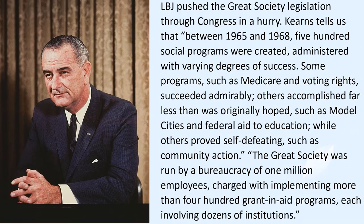LBJ pushed Great Society legislation through Congress in a hurry. Between 1965 and 1968, 500 social programs were created and administered with varying degrees of success. Some programs, such as Medicare and voting rights, succeeded admirably. Others accomplished far less than originally hoped, such as model cities and federal aid to education, while others proved self-defeating, such as community action. The Great Society was run by a bureaucracy of one million employees charged with implementing more than 400 grants and aid programs, each involving dozens of institutions. Johnson did establish a program planning and budgeting system to monitor these programs, but it was not effective, as concerns of the escalating Vietnam War distracted his attention.